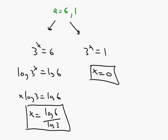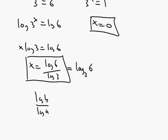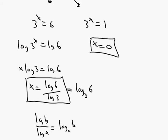That answer is really the same as log base 3 of 6 by the change of base formula — which says log b over log a equals log base a of b. You could actually skip the algebra by inspection: x is the power you put on 3 to get 6, which by definition is log base 3 of 6. So you can go right to the answer when you see one of these equations.